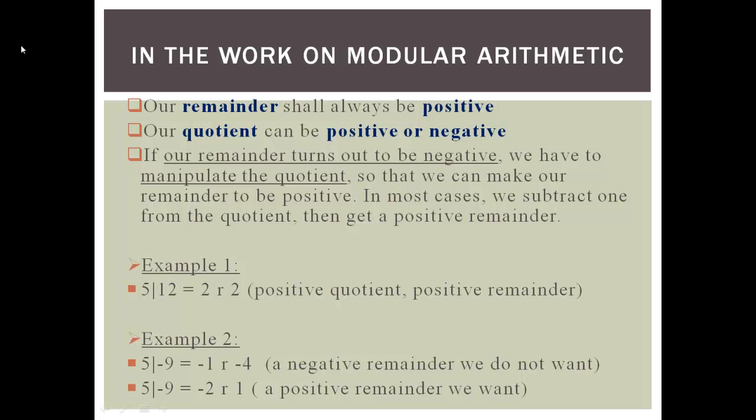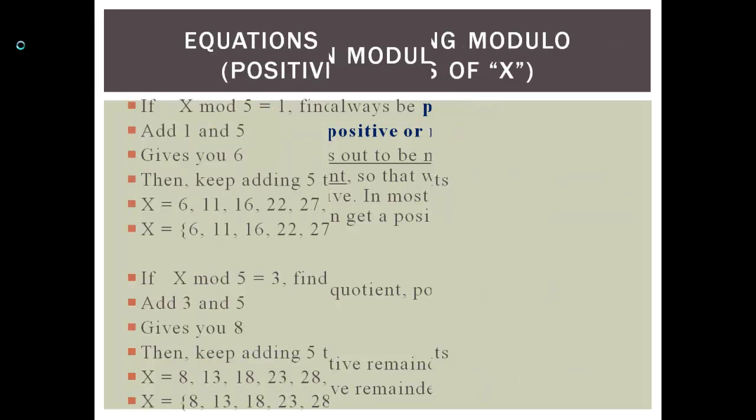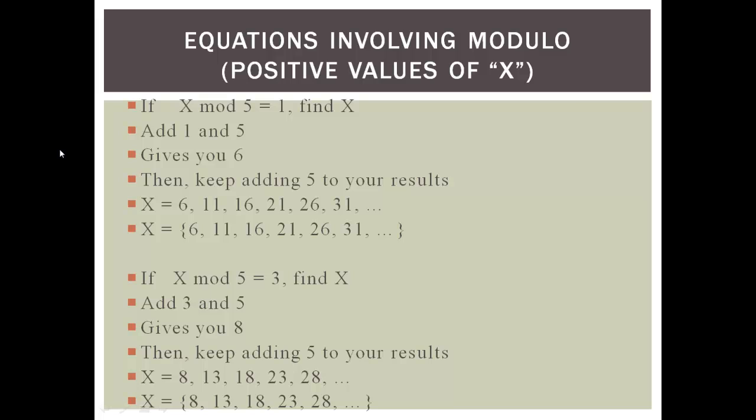So when you have this situation, first write it as: 5 divide negative 9 gives negative 1 remainder negative 4. Because the remainder is negative, subtract 1 from the quotient: negative 1 minus 1 gives negative 2. Then 5 times negative 2 is negative 10. What do you add to negative 10 to get negative 9? You add 1. Hence the remainder becomes positive 1.